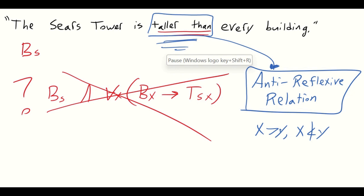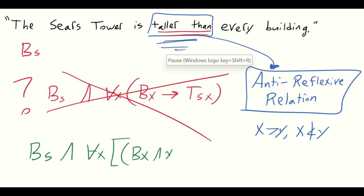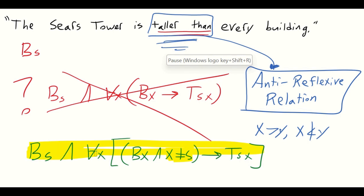Moreover, this also implies that we're going to specify that x cannot be the Sears Tower, because we cannot have a situation where the Sears Tower is taller than the Sears Tower. So we'll say instead: the Sears Tower is a building, and for all x, if x is a building and x is not identical to the Sears Tower, then the Sears Tower is taller than x. Now we have something that works — we must specify that x cannot be s, otherwise we get that impossible result. This is a good translation: the Sears Tower is a building, and for all x, if x is a building and x is not identical to the Sears Tower, then the Sears Tower is taller than x.